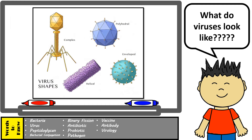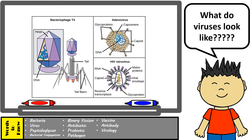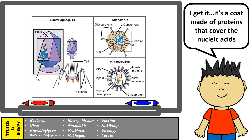Viruses actually come in different shapes and sizes, such as complex, helical, enveloped, or polyhedral, but they all have two main components in common: nucleic acid and a protein coat. Capsids are made up of proteins and, as you can see in this image, may take different shapes, but they all enclose the viral nucleic acid, which can either be DNA or RNA. Sometimes the capsid may be enclosed further with an envelope, such as seen in the influenza viruses. Capsids have glycoproteins that have specific shapes which match receptors found on the surface of host cells, allowing the virus to attach and enter its host cell.